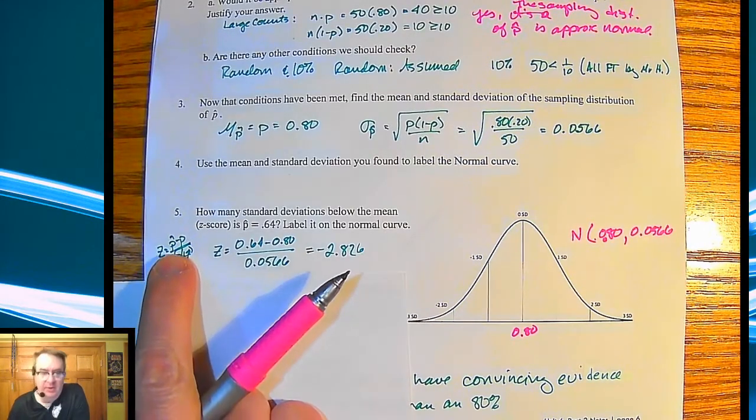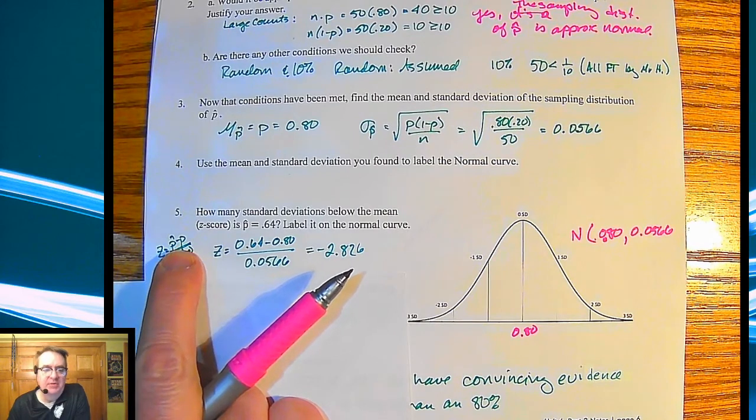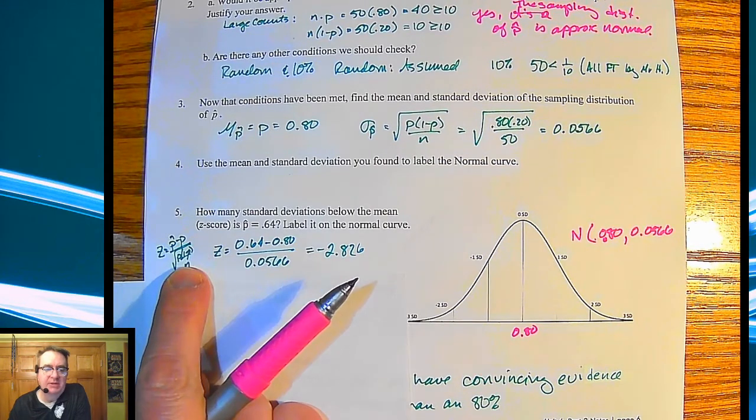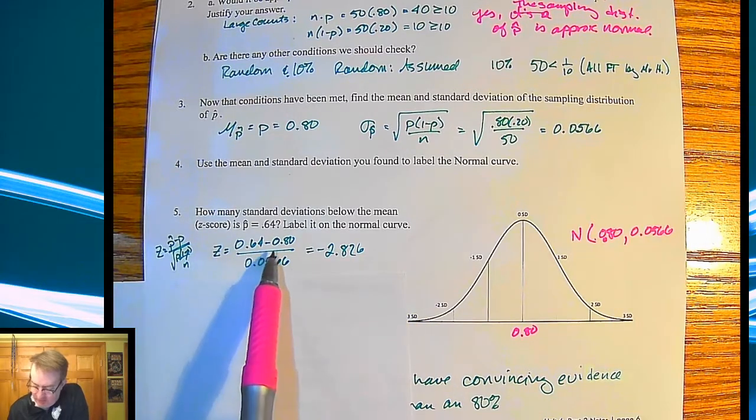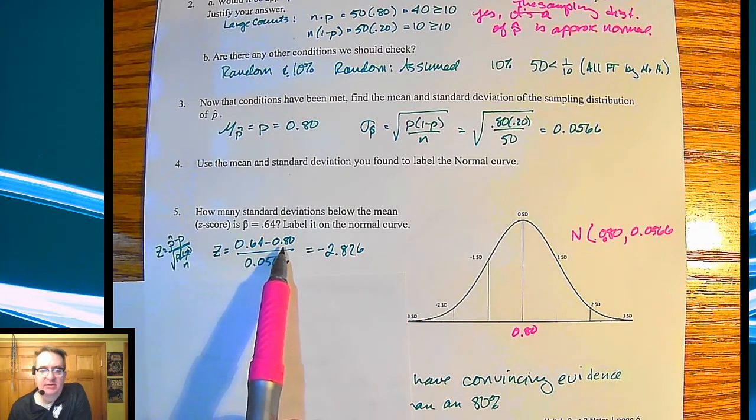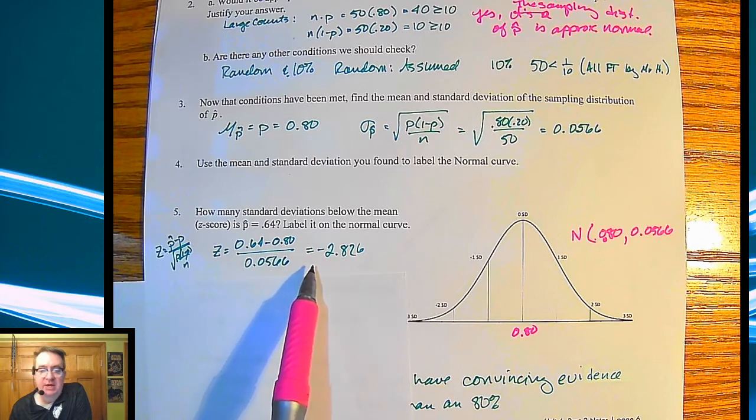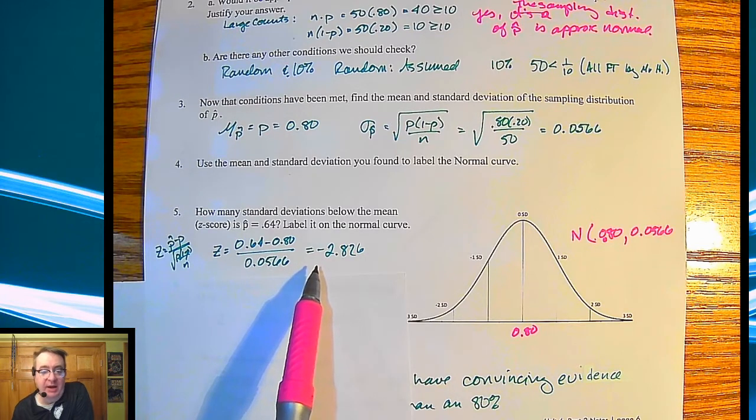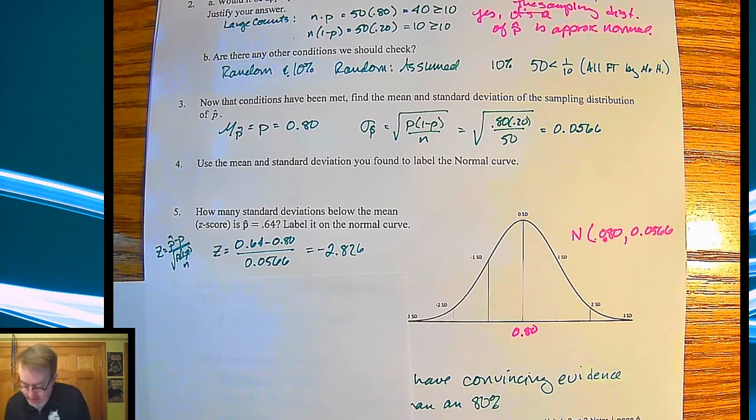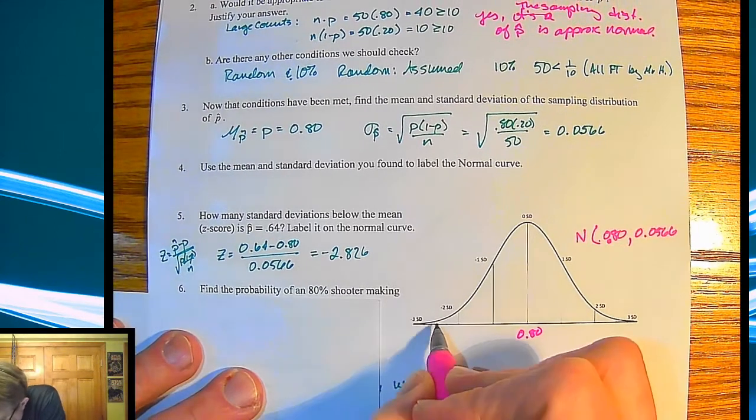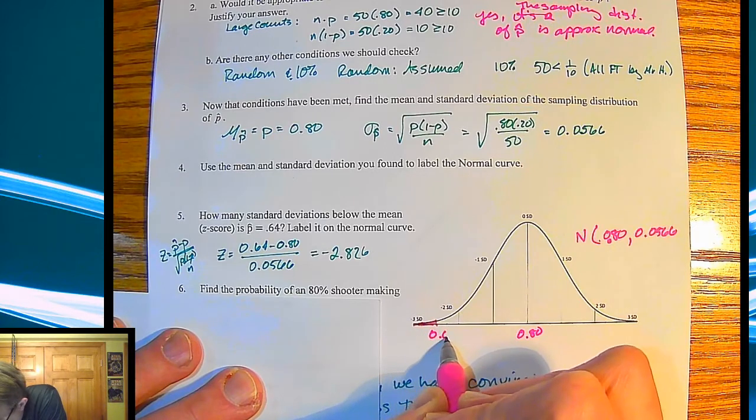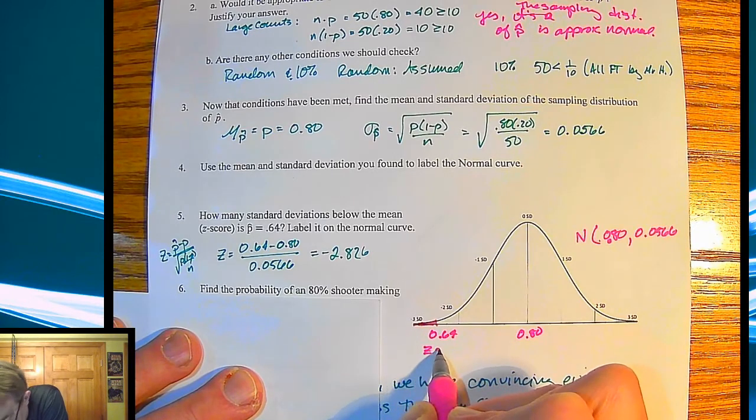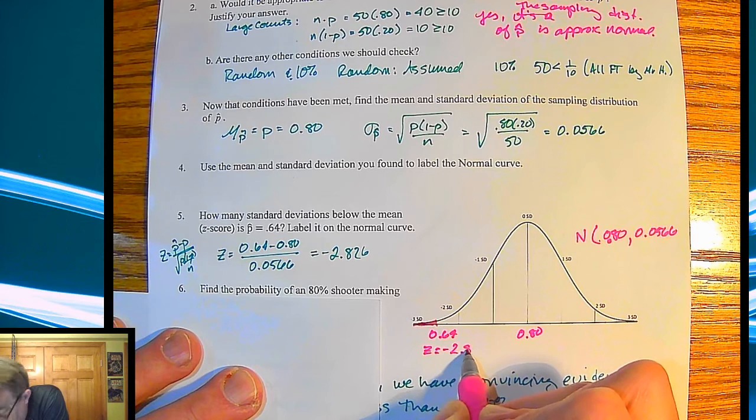So our z-score, remember, we're going to take the difference between our p-values, p-hat minus p divided by standard deviation. So I do that over here. So 64% minus 80% divided by our standard deviation gives me a z-score of negative 2.826. So it is not looking good for me. So down over here, I'm going to be looking at 0.64. That is a z-score of negative 2.82.